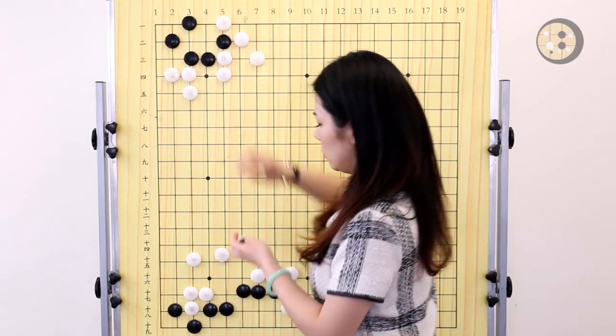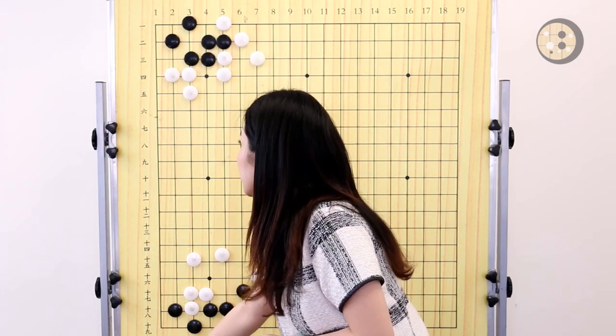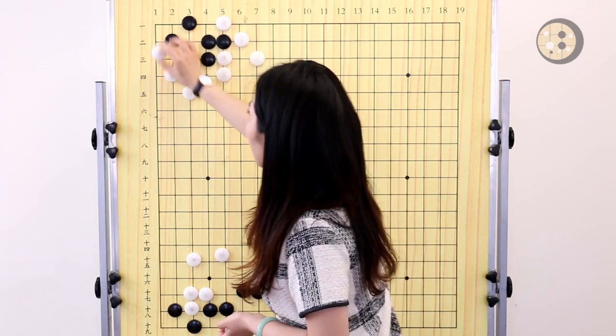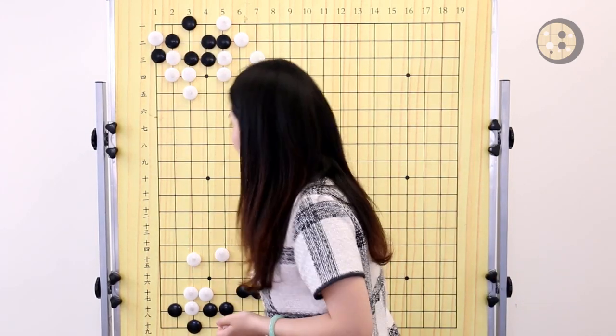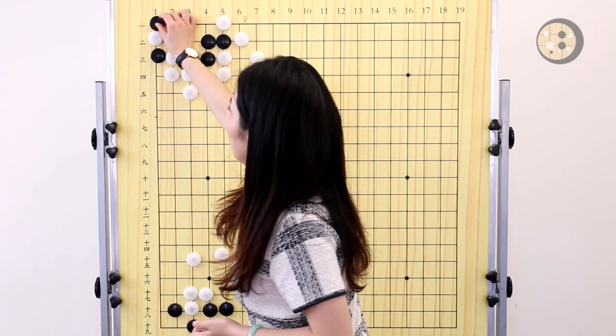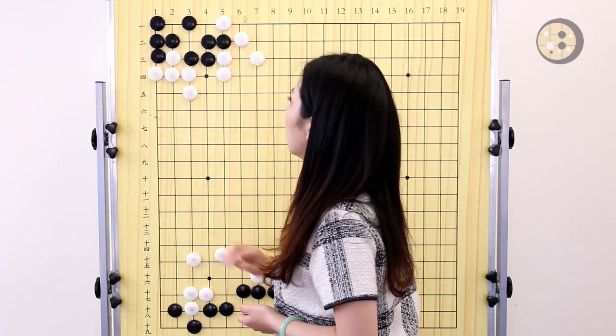Which is the tiger's mouth at the first line. After you play the tiger's mouth, you already have one eye over here. At the same time, you secure the eye in the corner. If white says, I'm going to try to destroy the eye in the corner, it won't work for white. You will have two real eyes.